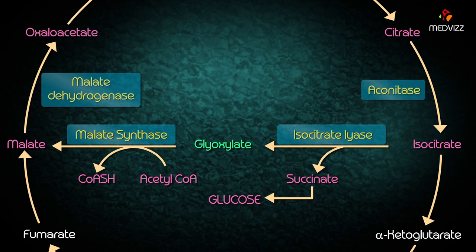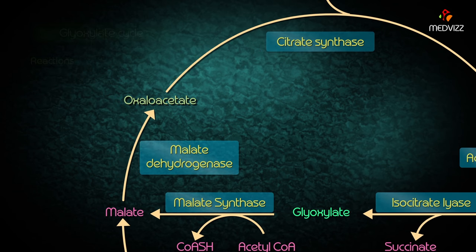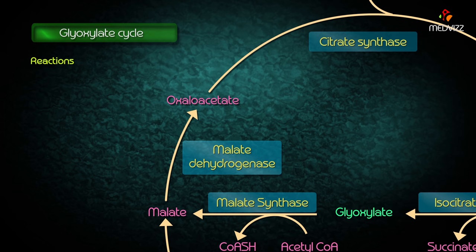The isocitrate is cleaved to succinate and glyoxylate by an enzyme isocitrate lyase. Acetyl coenzyme A condenses with glyoxylate to form malate in the presence of an enzyme malate synthetase. Finally, malate is oxidized to oxaloacetate.